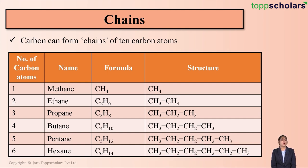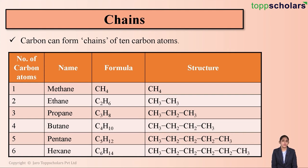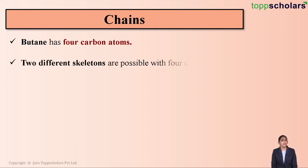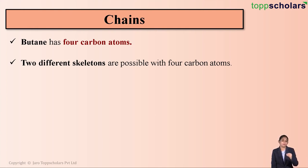We saw how carbon can link with other carbon atoms and result in the formation of long chains of carbon atoms. These are all straight chain carbon compounds. Now, if we talk about butane — the formula is C4H10, which means butane has four carbon atoms — for these four carbon atoms, there can be two different skeletons possible.